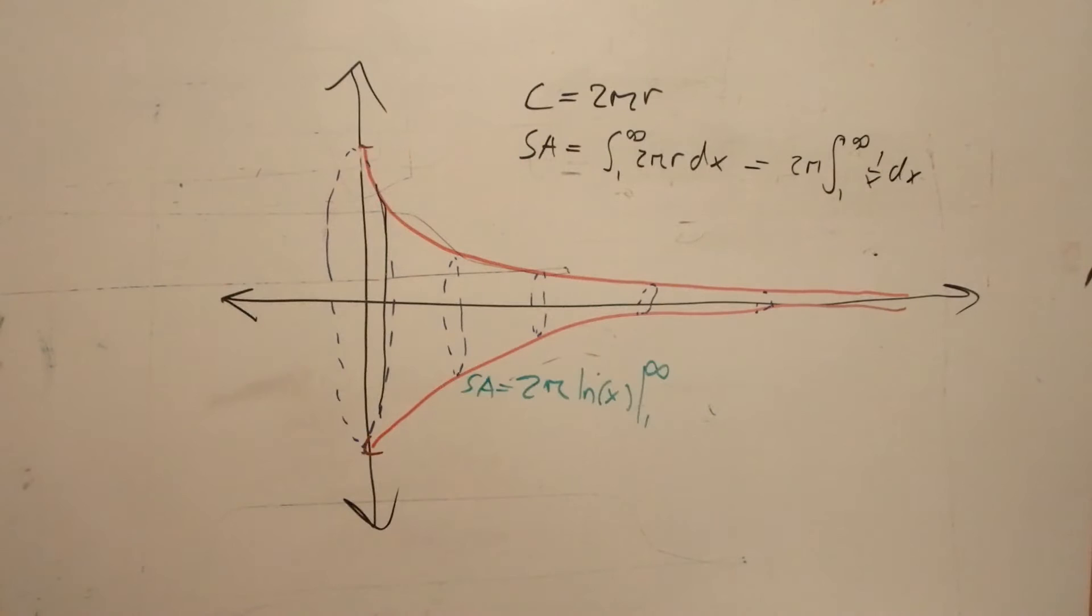So now what we have is surface area is equal to 2π times the ln of x from 1 to infinity, because the derivative of ln of x is 1 over x. So what we can now do is we can plug in 1 and infinity, and we'll notice that 1 goes to 0, but our upper bound still goes to infinity. So then we can conclude that the surface area of this graph is infinite.